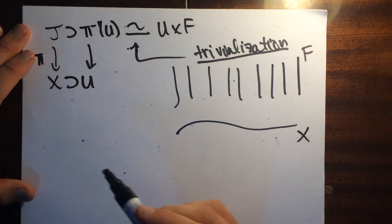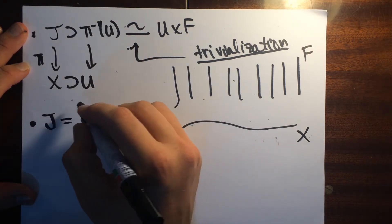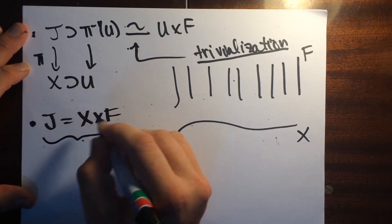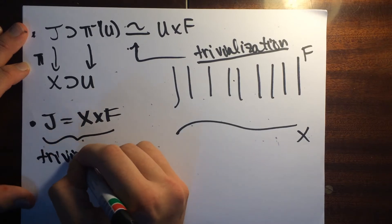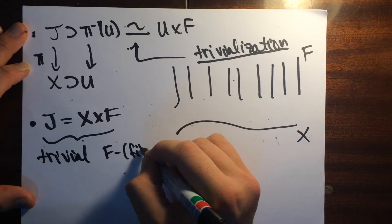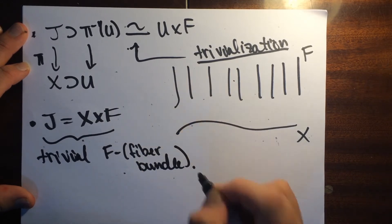If J looks like X cross F, then this is the example of the trivial F fiber bundle.